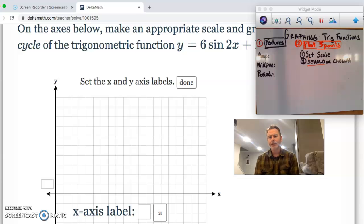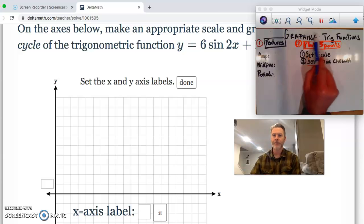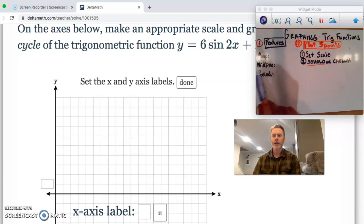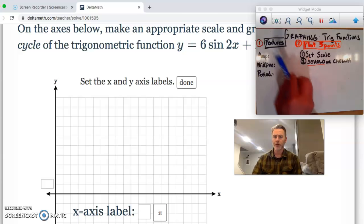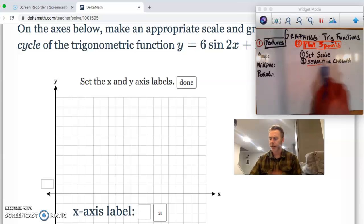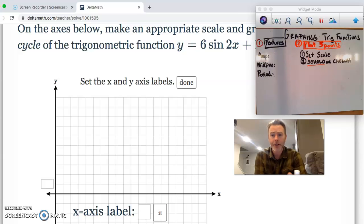Today what I'd like to do is more of the same as our last lesson. We want to graph trig functions. To do that, there's two things we need to do. One, we're going to write down these features. We'll talk more about those. Two, we're going to plot our points by setting the scale and going through our pattern.